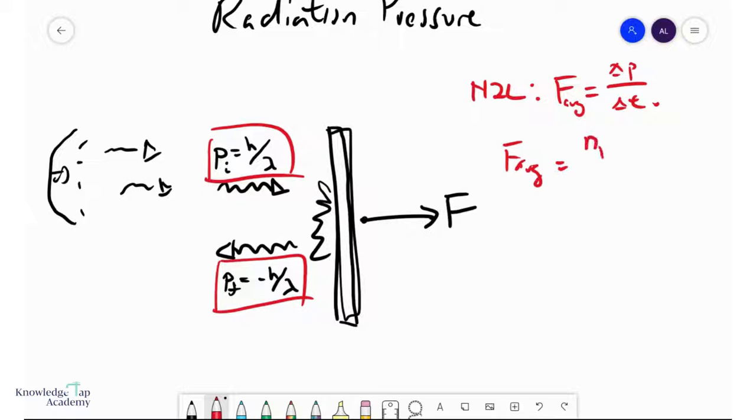if there are n photons coming in to this metal sheet over here, and they all experience some change in momentum delta p, this simply becomes the rate of photons incident on the sheet times the change in momentum that each of them experiences.